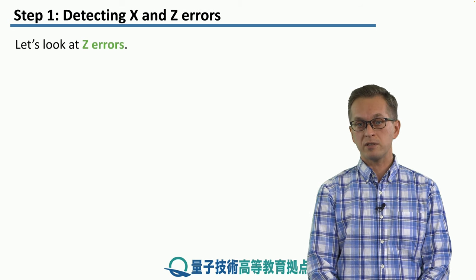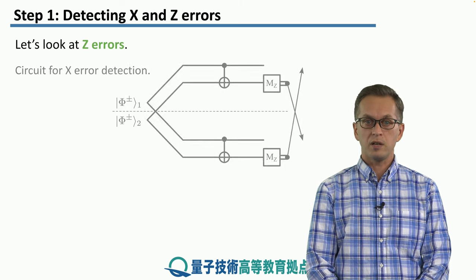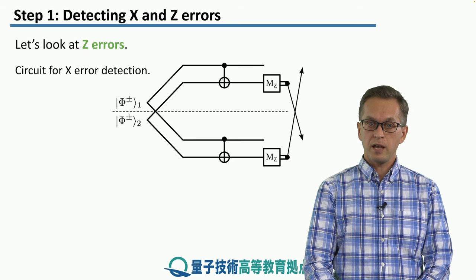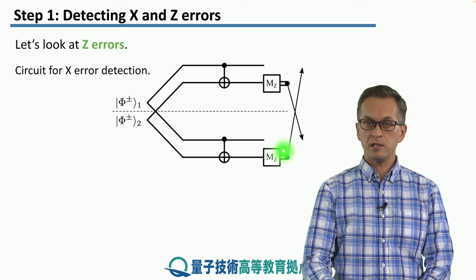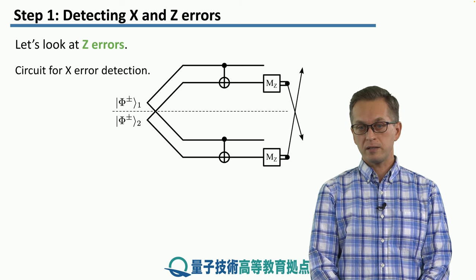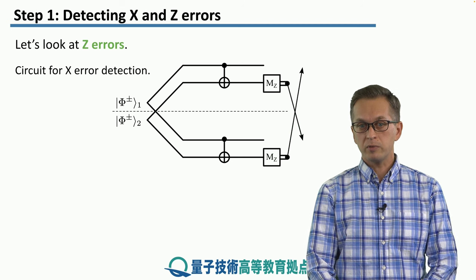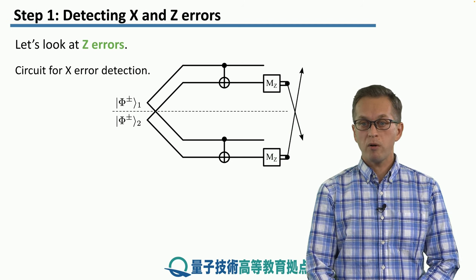Now let's see how Z errors are detected by this scheme. Again, the scheme is the same. We have the following circuits. We apply the CNOTs and then we measure in the Z bases. But this time, our inputs are either phi plus or phi minus.